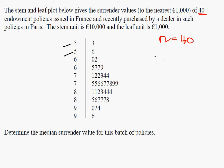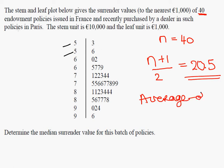My pen is a little bit tricky here, but n plus 1 over 2 is 40 plus 1 is 41 divided by 2. So that's 20.5. So what we're going to do is get the, this means get the average of 20th and 21st observation.